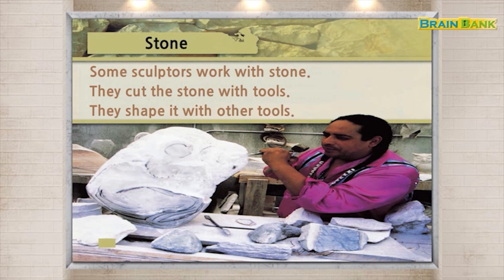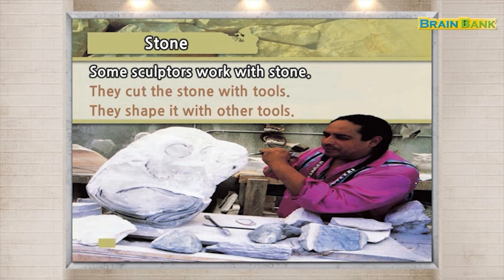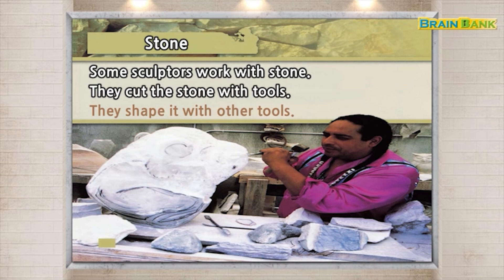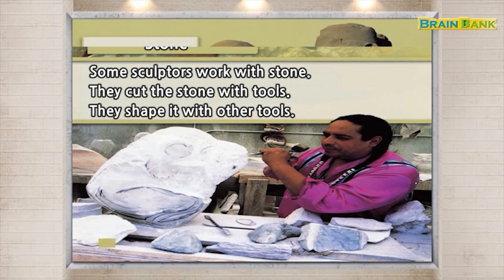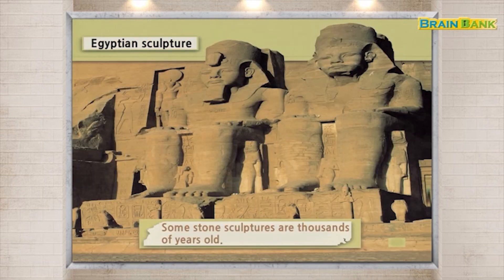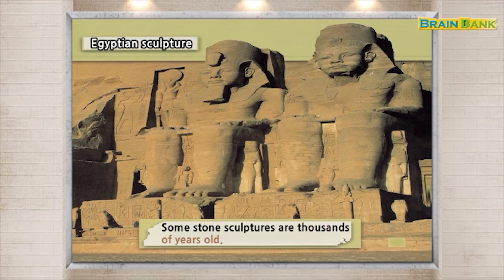Stone. Some sculptors work with stone. They cut the stone with tools. They shape it with other tools. Egyptian sculpture. Some stone sculptures are thousands of years old.